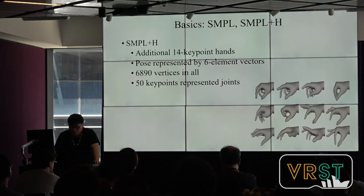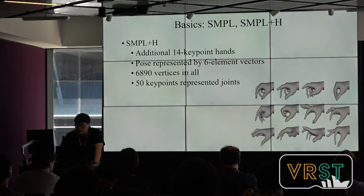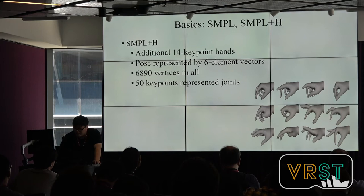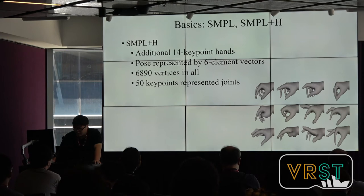SMPL-plus-edge was recently proposed. It is a SMPL model combined with additional hands, utilizing a hand model called the MANO model. Consequently, SMPL-plus-edge has additional 14 hand key points for each hand. The pose of each hand is represented by six-element vectors. In total, there will be 6,890 vertices in SMPL-plus-edge. It also has 50 key points for joints.